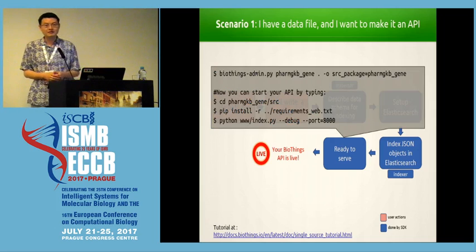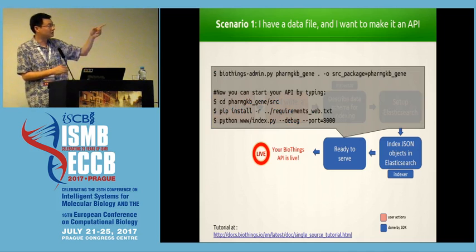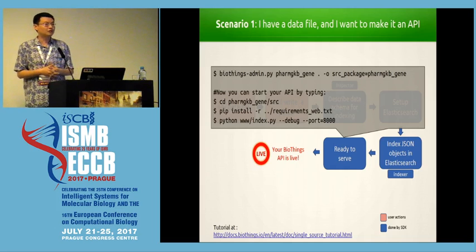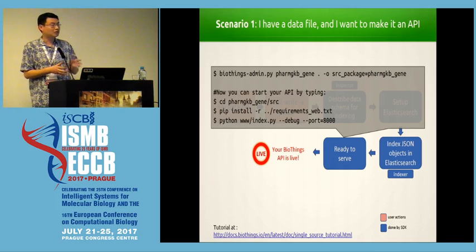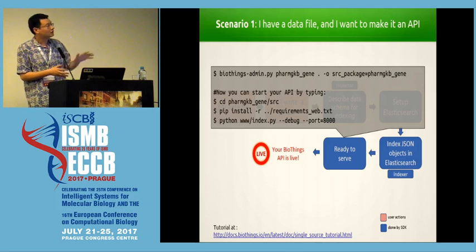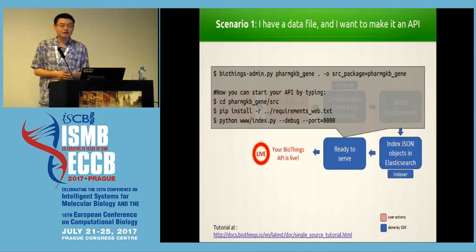When I say ready to serve, that little blue box means there's just a couple of lines of code. First you run biothings-admin and in one line you create the project folder for your API code. If you know Django, you'll find this similar to how you set up a Django application. Then you install all the requirements, run one line to start the API, and your API is live. You can start working on the API right away.